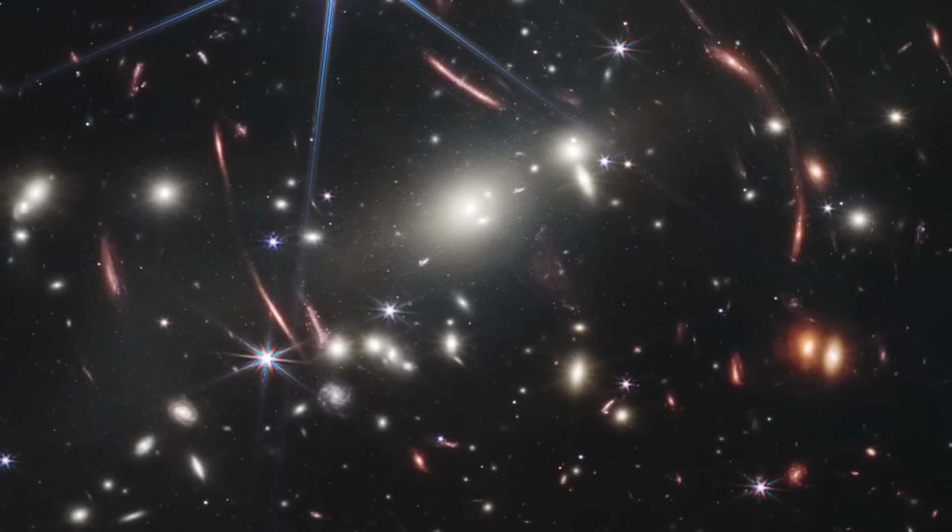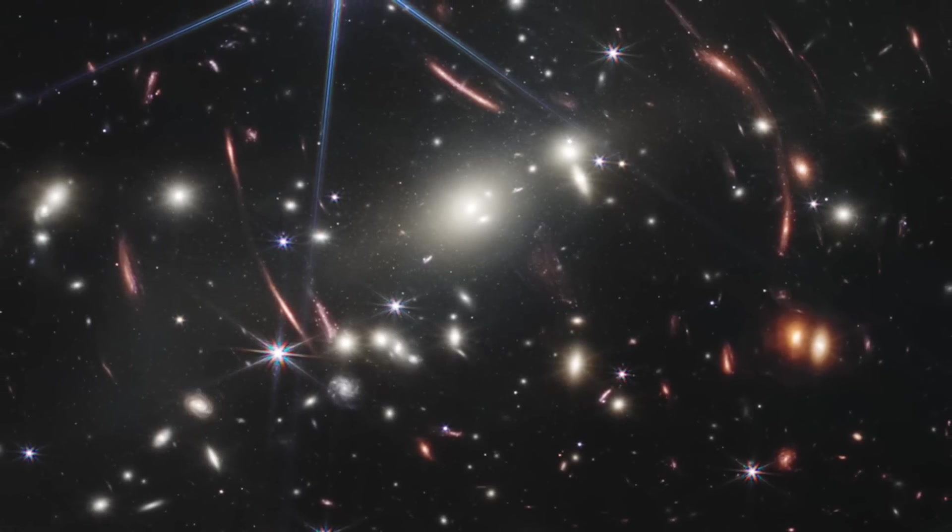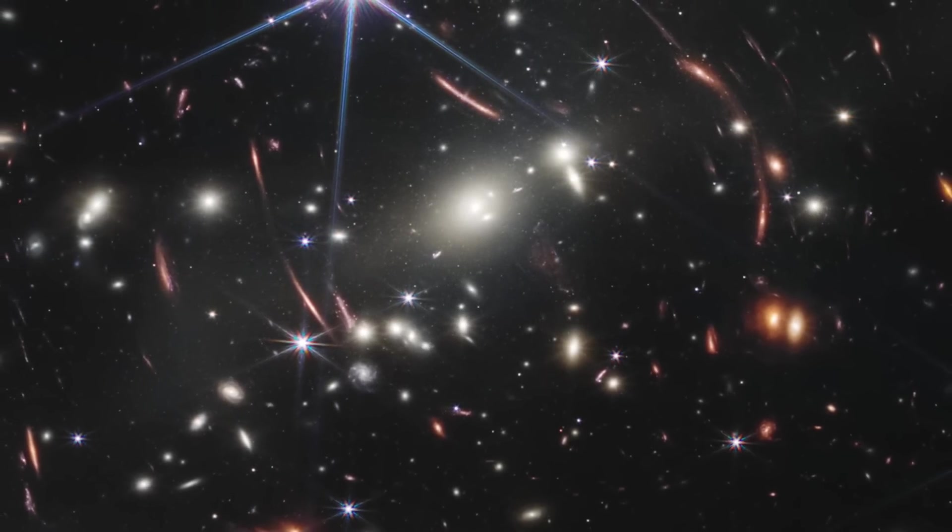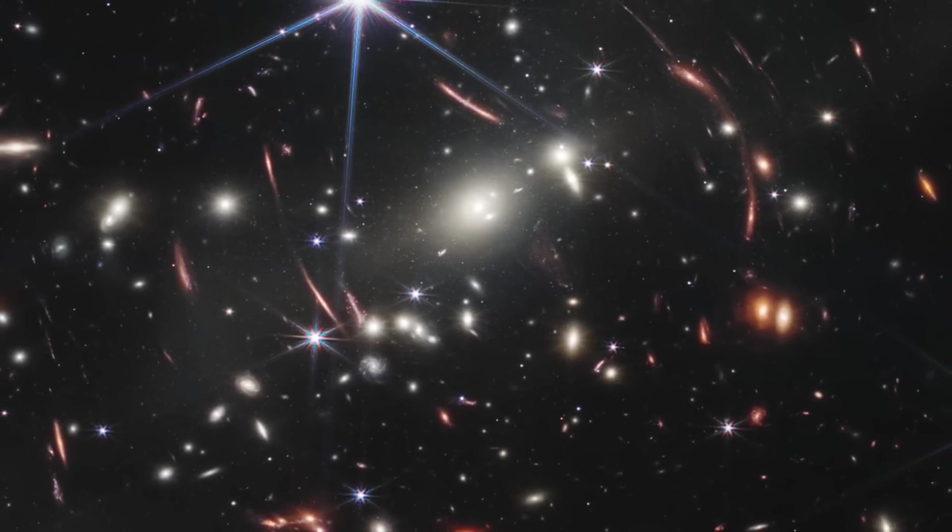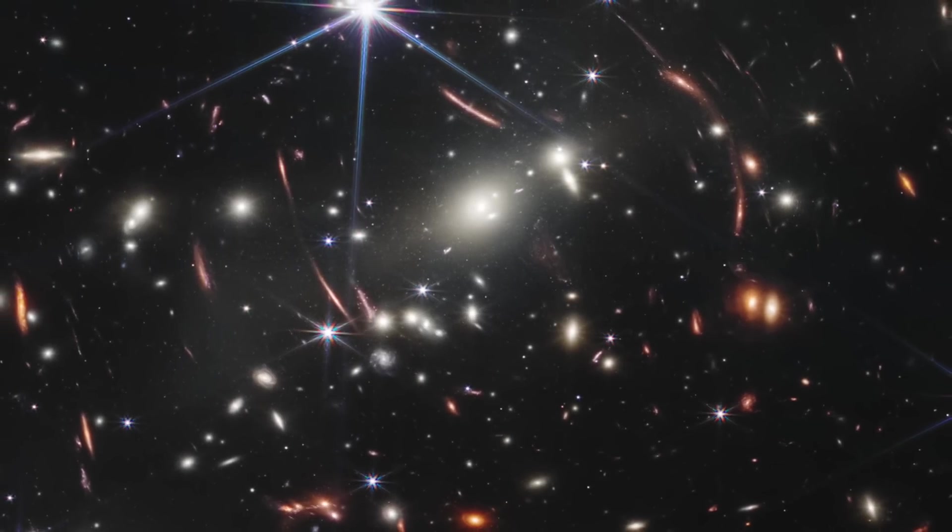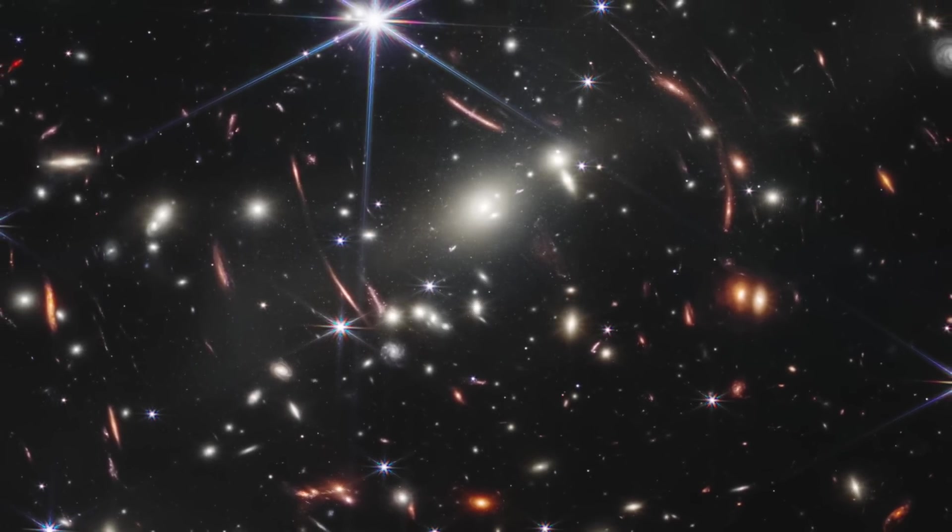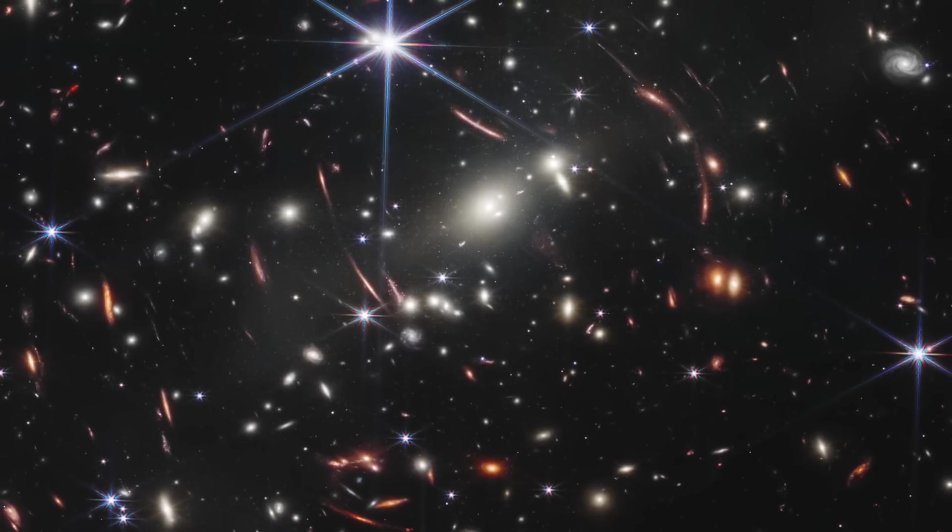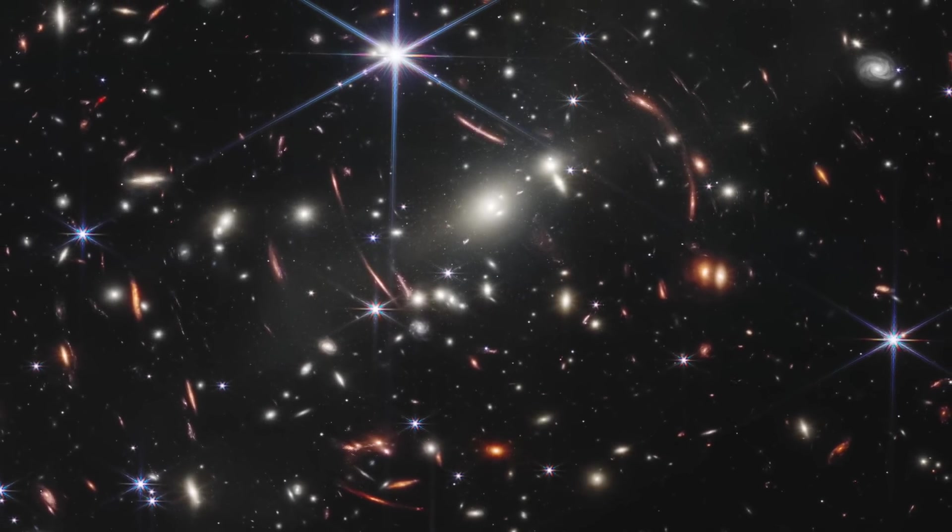Secondly, the Webb's first deep field is centered on a massive galaxy cluster, surrounded by stretched out, curved objects. In the standard model, these curved objects are distant galaxies that are gravitationally lensed, making them appear larger and brighter than they would be in the absence of that lensing.